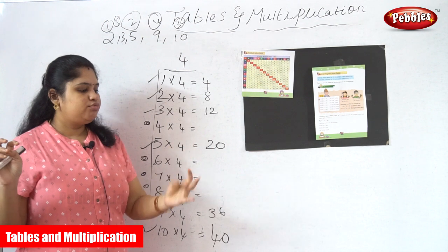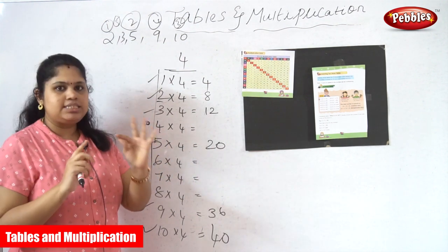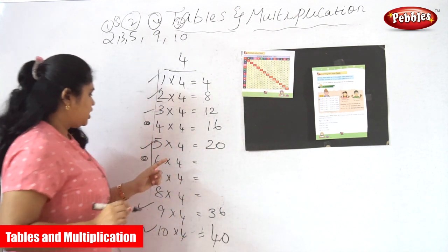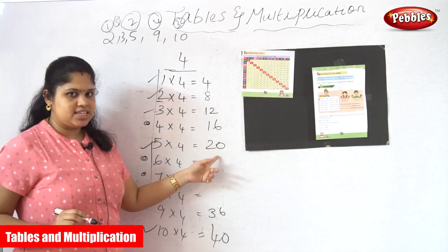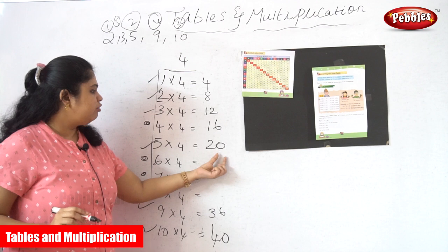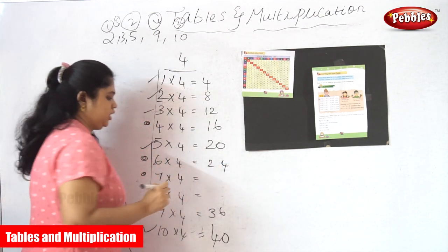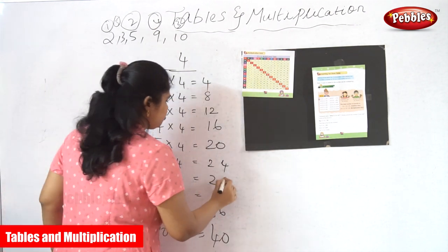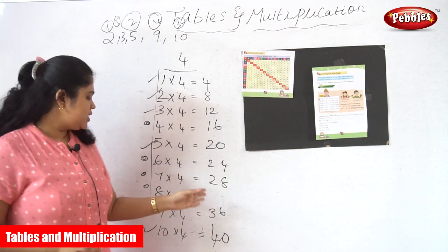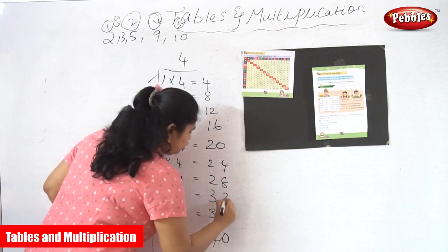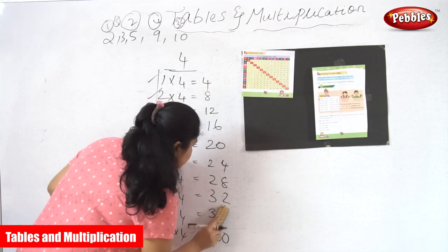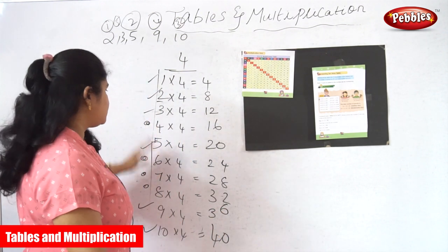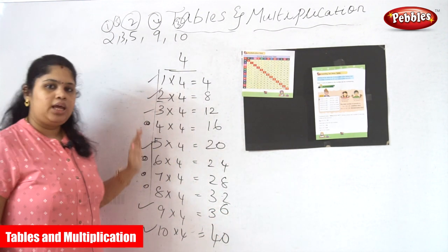So after 12, count 13, 14, 15, 16 — 16 is the next 4th number. Next is 20. If I add 4, the answer will be 24. Add 4 again — 28. Next there will be 32. And we already know 9 into 4 is 36. So this is the easiest way of learning the tables in order.